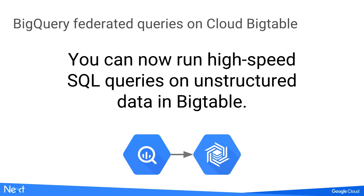Cutting straight to the chase, we just announced this morning that you can now run high-speed SQL queries on unstructured data in Bigtable. You don't need to hook up Hive or anything else like that. You can just connect BigQuery, and now you've got SQL. You can basically turn Bigtable into another virtual table in BigQuery and do everything you can do with BigQuery on top of it.